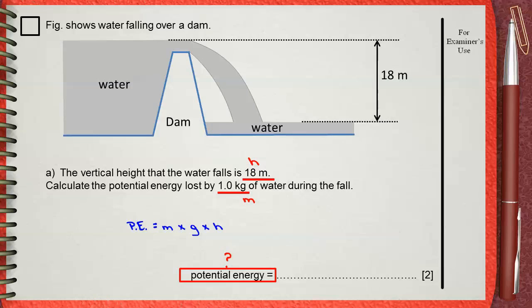So m is 1, g is 10, h the height is 18 meters. So the potential energy lost by 1 kg when falling from a height of 18 meters, this will be 180 Joules. One mark for the method and the equation, and one mark for the final answer. So potential energy at the top is 180 Joules.